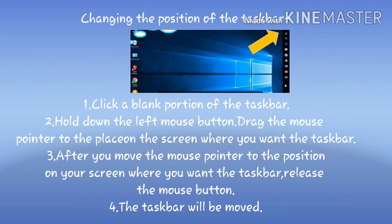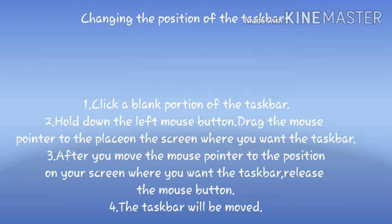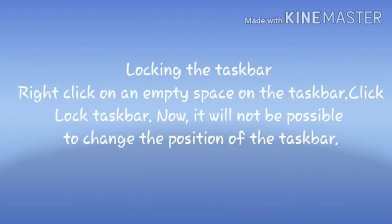After you move the mouse pointer to the position on your screen where you want the taskbar, release the mouse button. The taskbar will be moved. Next, locking the taskbar: right-click on an empty space on the taskbar and click 'Lock the Taskbar'.